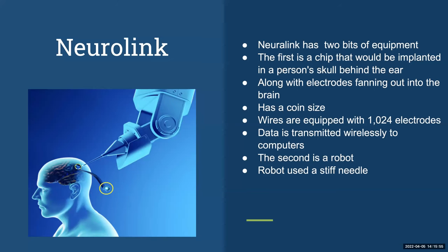Neuralink has two pieces of equipment. The first is a chip that will be implanted in the person's skull behind the ear. This chip has electrodes fanning out in the brain — very tiny wires roughly 20 times thinner than a human hair. The wires are equipped with more than a thousand electrodes, which are able to monitor brain activity and theoretically stimulate the brain. Data is transmitted wirelessly via the chip to computers, where it can be studied and analyzed. The second piece of equipment is a robot that could ultimately implant the chip using a stiff needle to thread the flexible wires from the Neuralink chip into the person's brain — described as similar to a sewing machine.